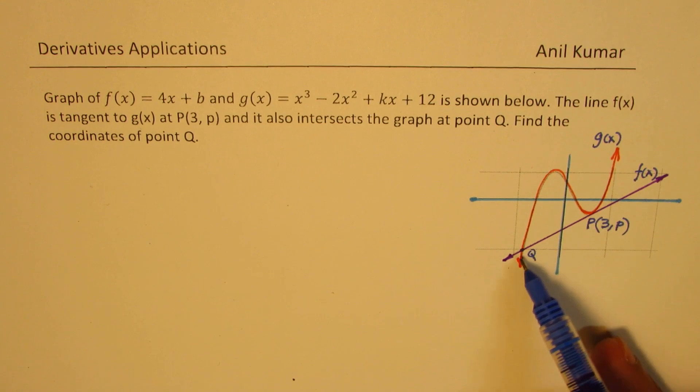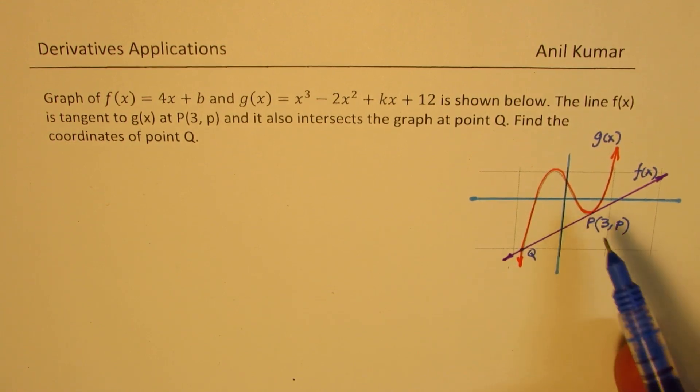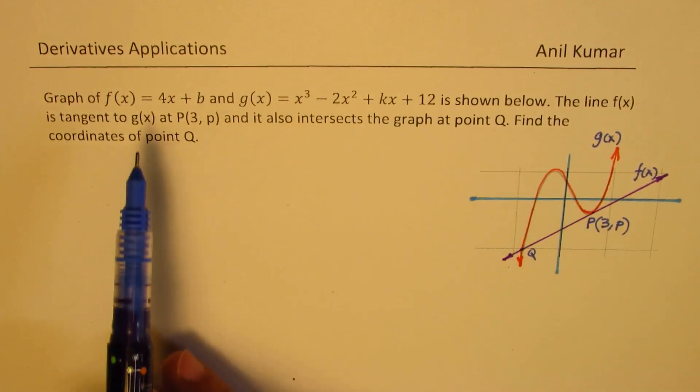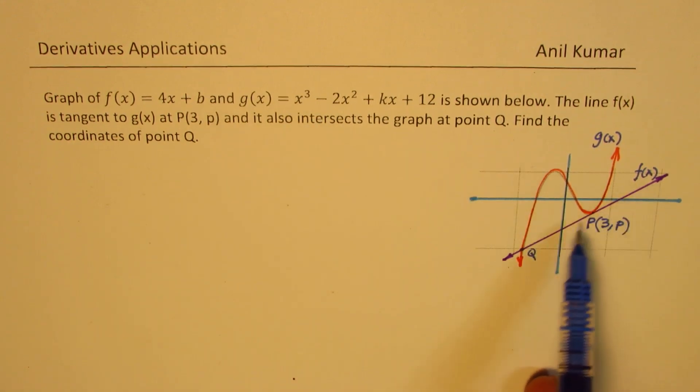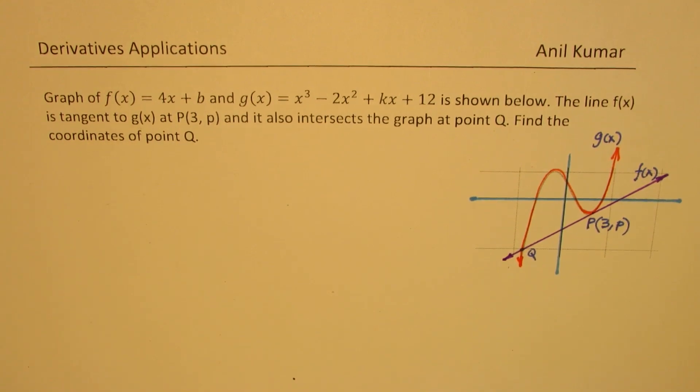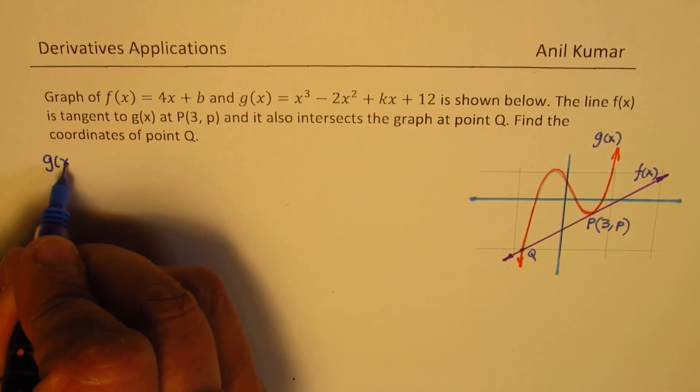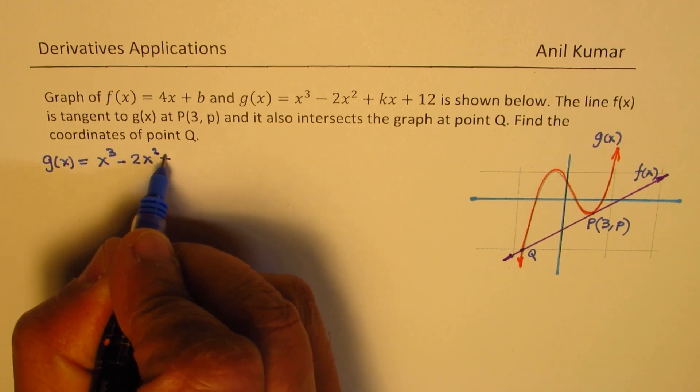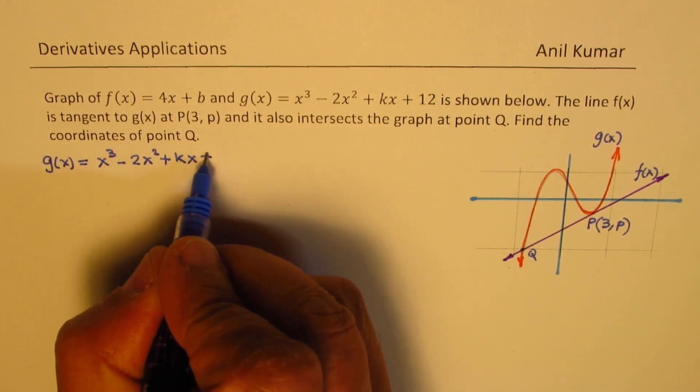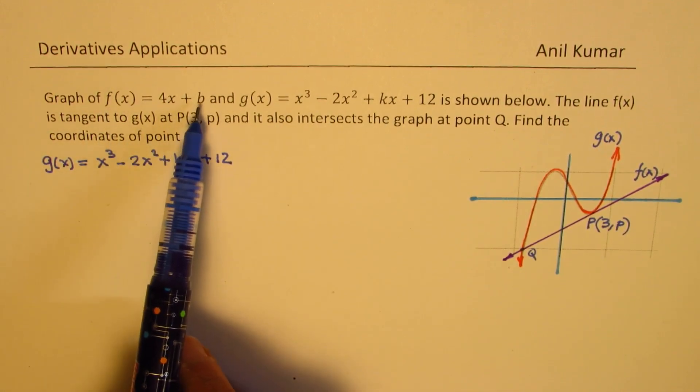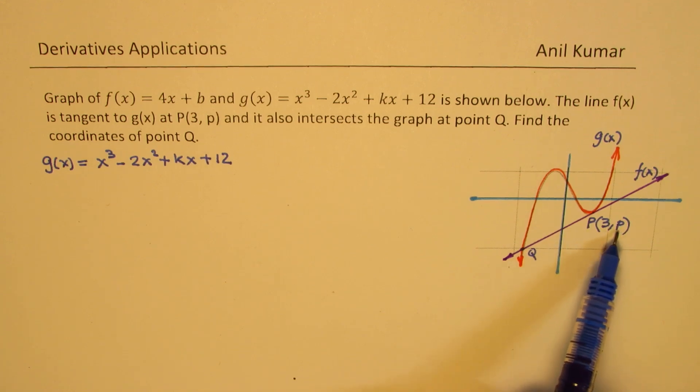Now, once we know that this line is tangent, then at this point the derivative of the function gives you the tangent, and the slope of the tangent should be 4, since the line tangent has the equation 4x + b. So I'll begin from here. We're given the function g(x) = x³ - 2x² + kx + 12. See, there are a lot of unknowns. In the polynomial k is unknown, in the equation of the line b is unknown, the point P is unknown, and then point Q which we need to find.